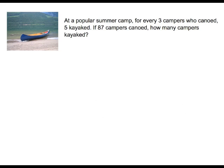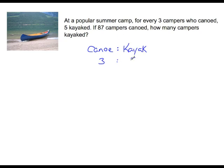Let's take a look at one final example. At a popular summer camp, for every 3 campers who canoed, 5 kayaked. If 87 campers canoed, how many campers kayaked? Let's start by building the ratios, comparing campers who canoed to campers who kayaked. From the question, 3 campers canoed to 5 campers who kayaked, so our first ratio is 3 to 5. If 87 campers canoed, we want to find k, the number who kayaked.